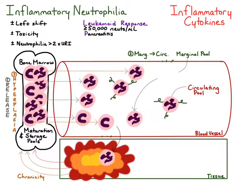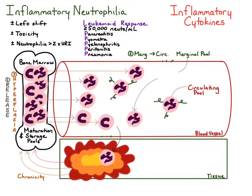Fortunately, most causes of a leukemoid response start with P. The first is pancreatitis, inflammation of the pancreas. Then pyometra, inflammation of the uterus. Pyelonephritis, inflammation of the kidney. Peritonitis, inflammation of the peritoneal cavity. And the sneaky P — pneumonia, inflammation of the lungs. There are also non-P causes: immune-mediated hemolytic anemia and cancer with necrotic centers.